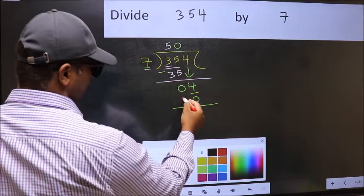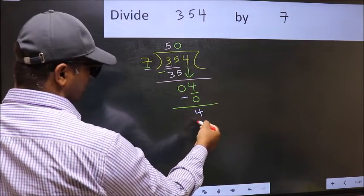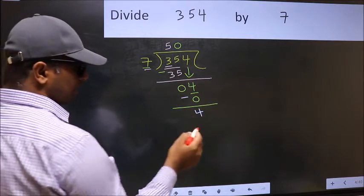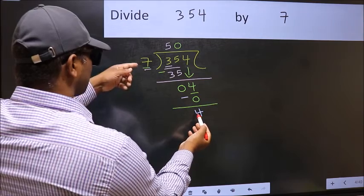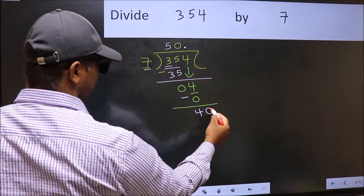Now you should subtract. 4 minus 0, 4. Over here, we did not bring any number down. And 4 is smaller than 7. So now you can put dot and take 0.